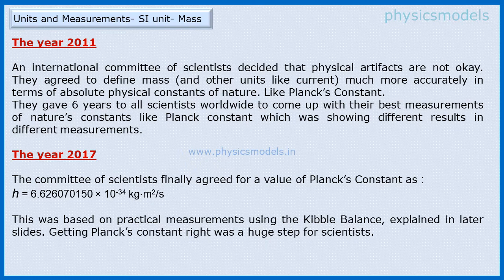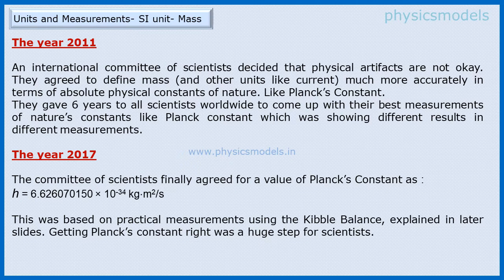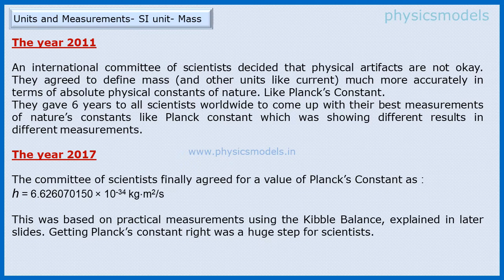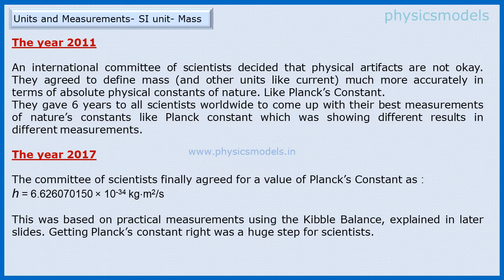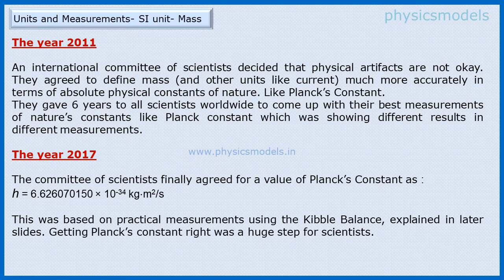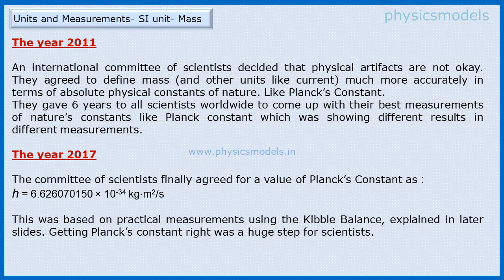Therefore in 2011, scientists decided that physical artifacts are no longer okay and agreed to define mass more accurately in terms of nature's constants. Planck's constant is one such thing. The value of Planck's constant was varying in different measurements, so the committee gave six years to come up with their best measurements. In 2017, after looking at everybody's measurement, scientists finally agreed for a value of Planck's constant: H = 6.62607015 × 10^-34 kg·m²/s. This measurement was done using the Kibble balance.